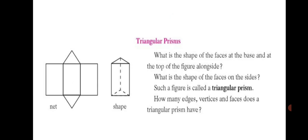Let's learn about triangular prisms. What is the shape of the faces at the base and at the top of the figure? At the base and at the top we can see the shape is triangular. What is the shape of the faces on the sides? On the sides we can see that it is rectangular. Such a figure is called a triangular prism.